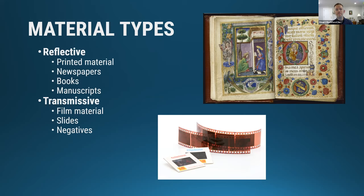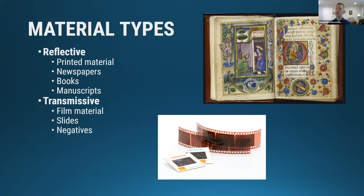The two main material types we deal with are reflective and transmissive. Reflective is basically anything printed — paper, newspapers, books, manuscripts, even some 3D objects. Transmissive is your film, slides, and negatives — anything that light can shine through to illuminate the object. Some flatbed scanners like ours can do both reflective and transmissive, which really helps flexibility so you don't need a dedicated machine for each type.